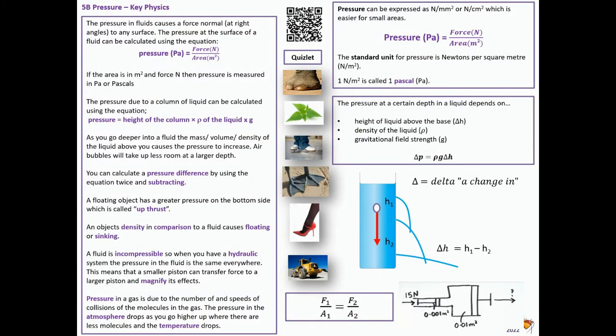This is a quick introduction into IGCSE physics 5b pressure. Pressure in a fluid causes a force normal at right angles to any surface. The pressure at the surface of a fluid can be calculated using the equation force in newtons over area in meter squared gives you pressure in pascals.